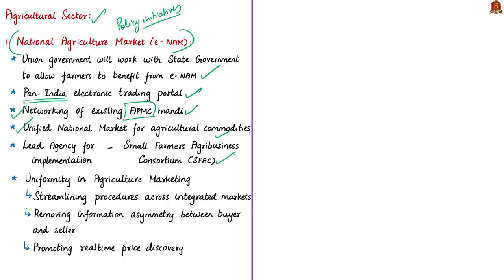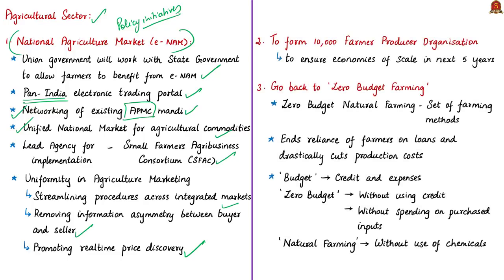The Small Farmers Agribusiness Consortium (SFAC) is the lead agency for implementing eNAM and works under the aegis of the Ministry of Agriculture and Farmers Welfare, Government of India. eNAM aims to promote uniformity in agriculture marketing by streamlining procedures across integrated markets, removing information asymmetry between buyers and sellers, and promoting real-time price discovery based on actual demand and supply. Integration of APMCs across the country through a common online market platform facilitates pan-India trade in agricultural commodities through transparent auction processes and timely online payments.